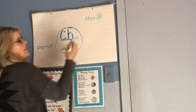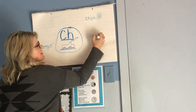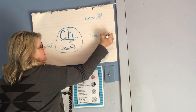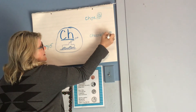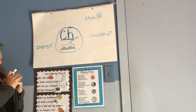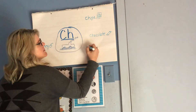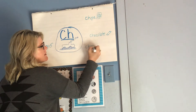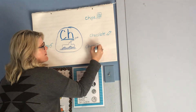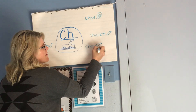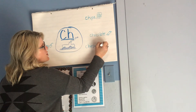Chocolate! Draw a chocolate candy bar. Chirp — like a bird. Chirp, chirp, chirp.